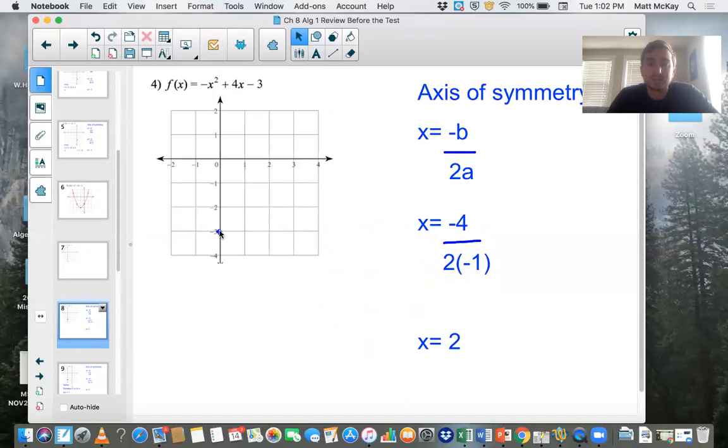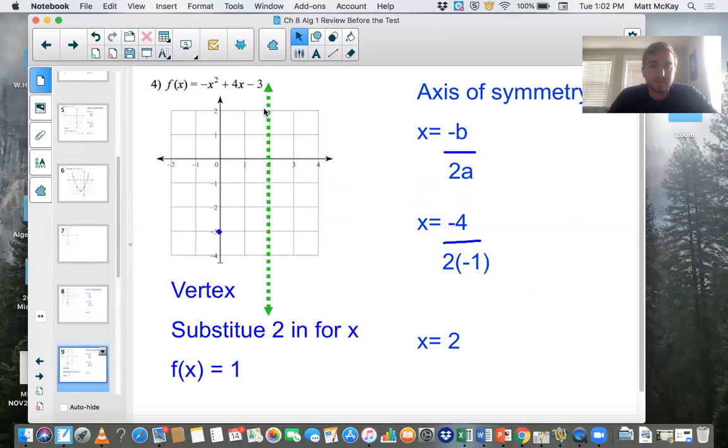Then the axis of symmetry, x = -b/2a, substitute the values in. Negative b, b is four in this case, two times negative, don't forget the negative, negative one. So we get the axis of symmetry is going to be at x equals two. So here's where the axis of symmetry is going to be at. Now I'll draw that imaginary line here. So again, y-intercept is here, here's the axis of symmetry.